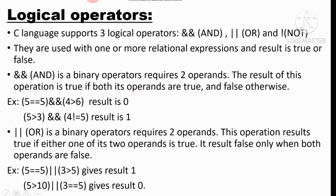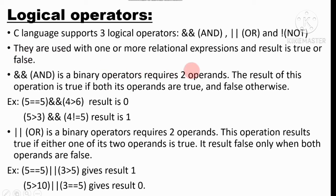Next are logical operators. C language supports three logical operators: AND (&&), OR (||), and NOT (!). They are used with one or more relational expressions and the result is true or false. The AND operator is a binary operator — it requires two operands. The result of AND is true only if both its operands are true.